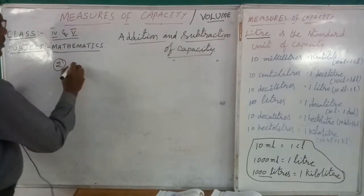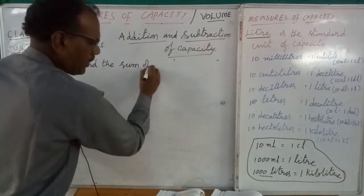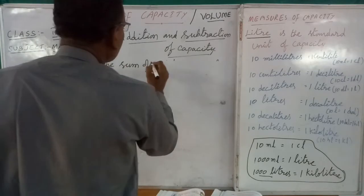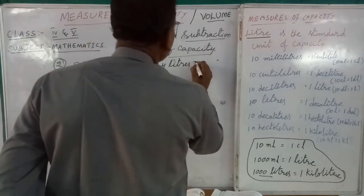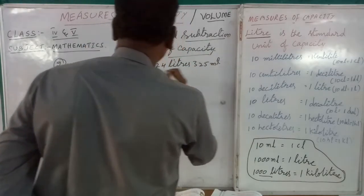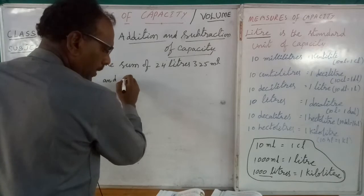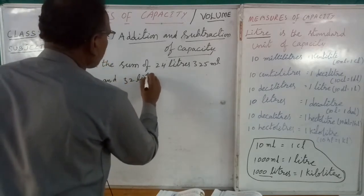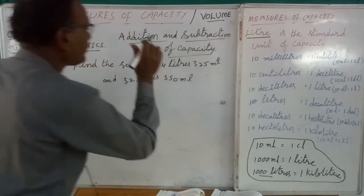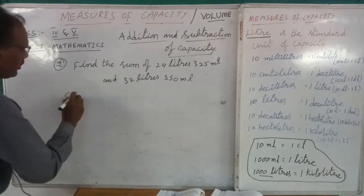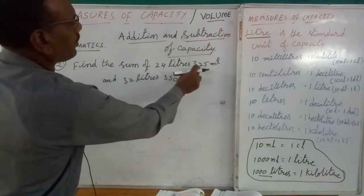Point number two: find the sum of 24 liters 325 ml and 32 liters 325 ml.